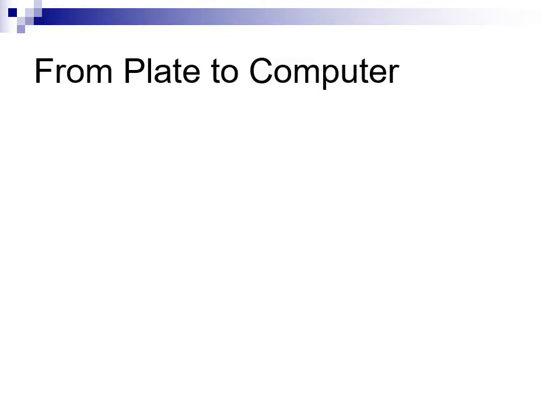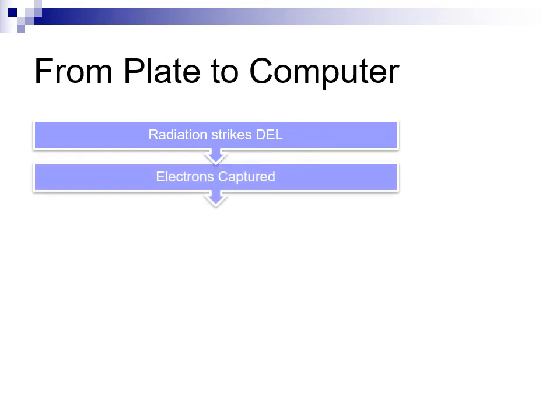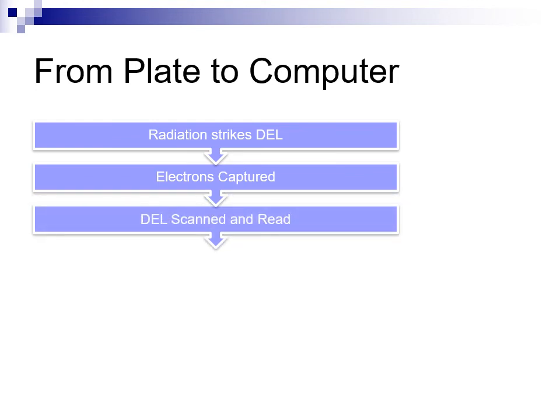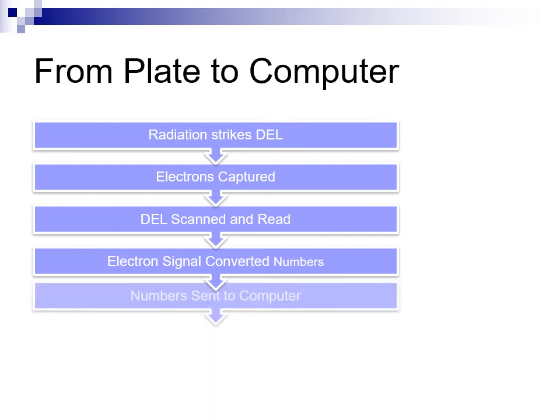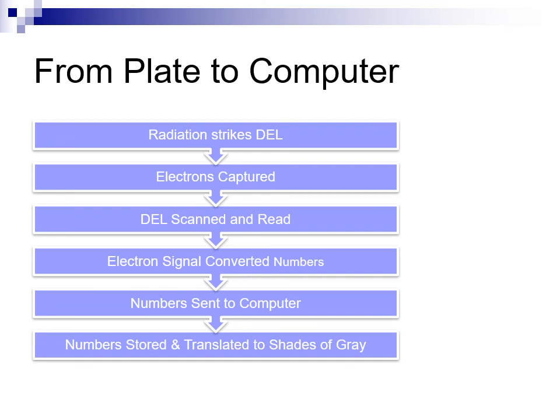To summarize this process, radiation strikes the DEL and causes an electron flow within the DEL proportional to the amount of radiation striking it. The DEL stores these electrons in a capacitor, awaiting to be read by the plate's electronics. Each of the DELs are read and scanned, and the electronic signal is converted into digital numbers. The digital numbers are sent to the computer and stored in memory. Finally, the numbers are copied to screen memory and displayed as an image.